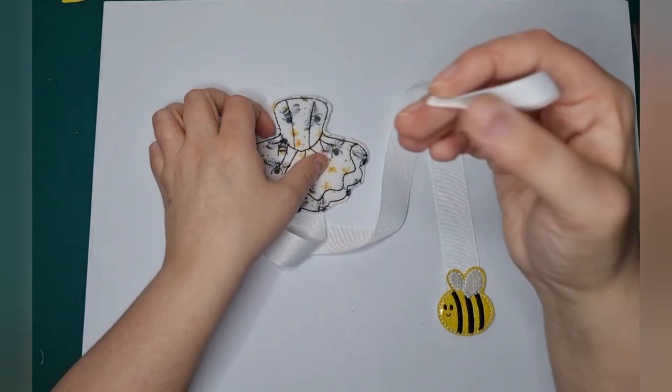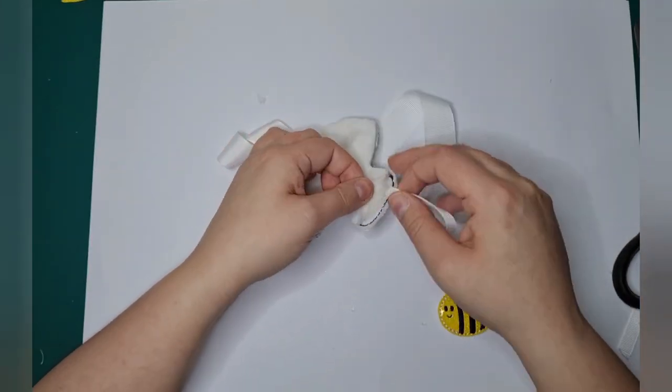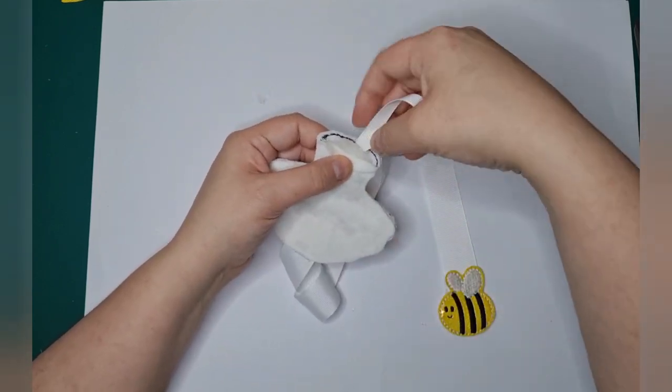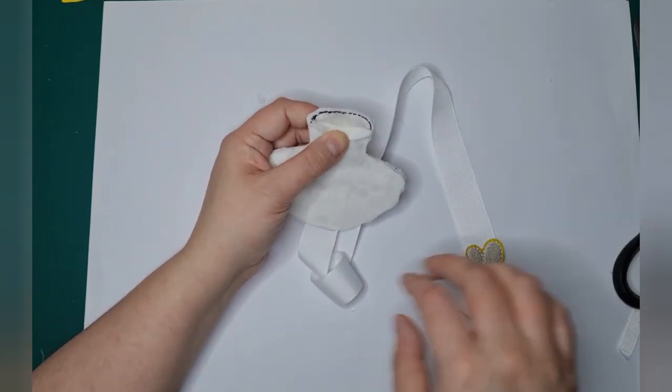And then I should have left a pocket at the top. But I didn't. So I've had to peel mine back a little bit. But you'd leave that bit unstuck. And then we're going to put a touch of glue back here.